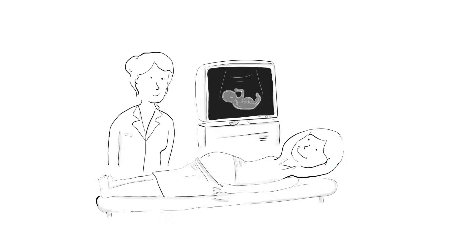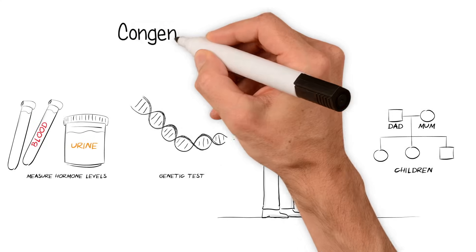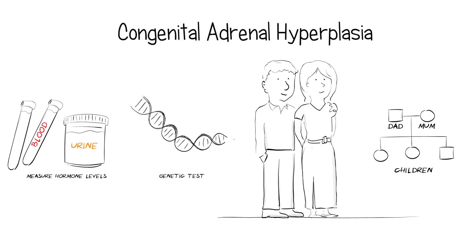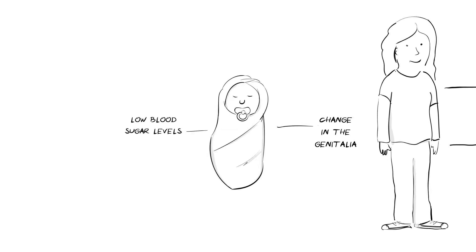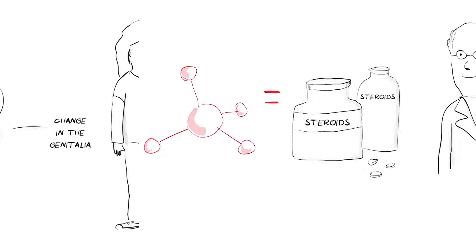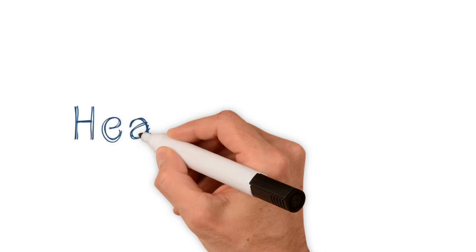In this HealthSketch, we've talked about congenital adrenal hyperplasia, an inherited condition that affects the way hormones are made in the adrenal gland. We've talked about how the condition occurs, the symptoms that result, and how it can be treated. We hope this HealthSketch has been helpful to you and those around you.